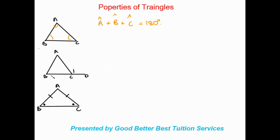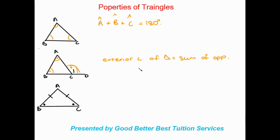Looking at the next example, we have triangle ABC with line BD protruding out of the triangle, giving us an exterior angle. The rule is that the exterior angle of a triangle is equal to the sum of the opposite interior angles. So this exterior angle is equal to the sum of those two opposite interior angles.